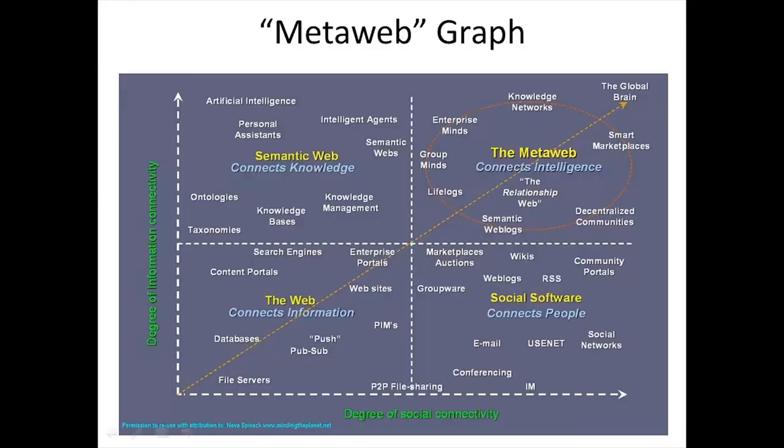This slide presents a slightly different way of looking at a related scenario. Novus Bivak, on his blog Minding the Planet — the URL is given at the bottom of the graph — suggested that Internet technologies can be categorized using two dimensions: the degree of information connectivity and the degree of social connectivity. This typology becomes a conjecture that we will explore over this week and next.